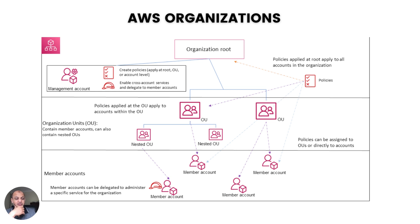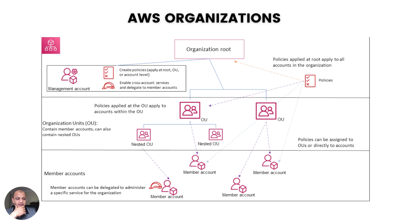AWS Organizations allows you to create OUs. If you work in Active Directory, you know OUs are like folders in which you can enforce policies. Security teams want to make sure they have controls — they want developers to have admin access in the developer account but not in the production account. With AWS Organizations, you can create OUs, group AWS accounts, and apply rules to them, just like Active Directory.